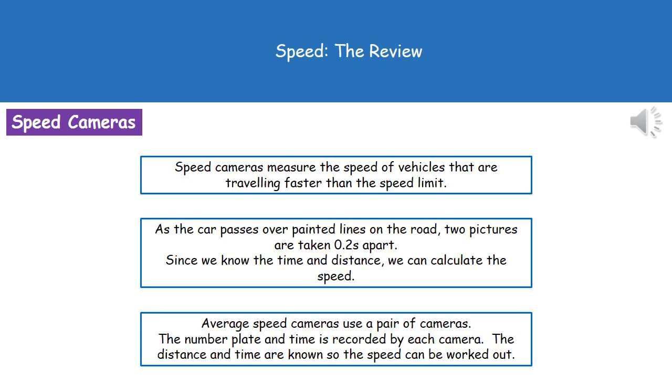Again, we know the distance between the two cameras. As the car passes the first camera, the license plate is recorded along with the time. Then as it passes the second camera further down the road, again it records the license plate and the time. From those two pictures we can work out how long it took the car to travel the known distance, so we've got our distance divided by time once more to give us our speed.